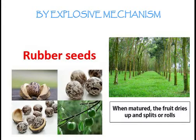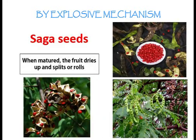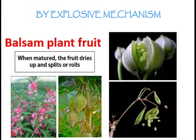Some plants disperse their seeds by using an explosive mechanism so that they are thrown far away from the parent plant. Examples are rubber trees, saga trees, and balsam plants. When matured, the fruit dries up and splits or rolls to enable the seeds to be dispersed.